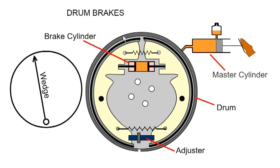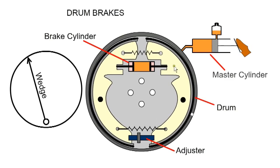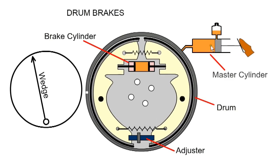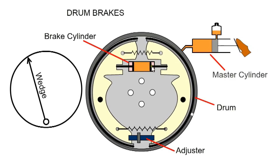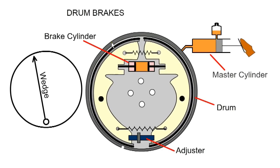Drum brakes consist of an outer drum, which the wheel is attached to, and the inner brake shoes. When the pedal is pressed, the high-pressure fluid forces out the two pistons in the brake cylinder, pressing the shoes against the drum.